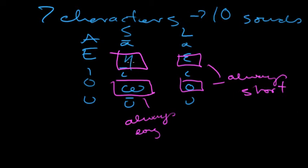We've got omega and eta. These are unique characters for the long versions. But we see alpha, iota, and upsilon are able to do double duty, creating two different sounds, or two different lengths with one character.